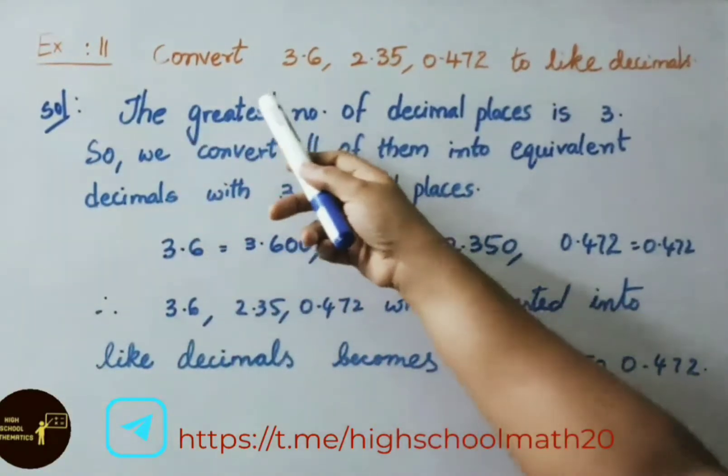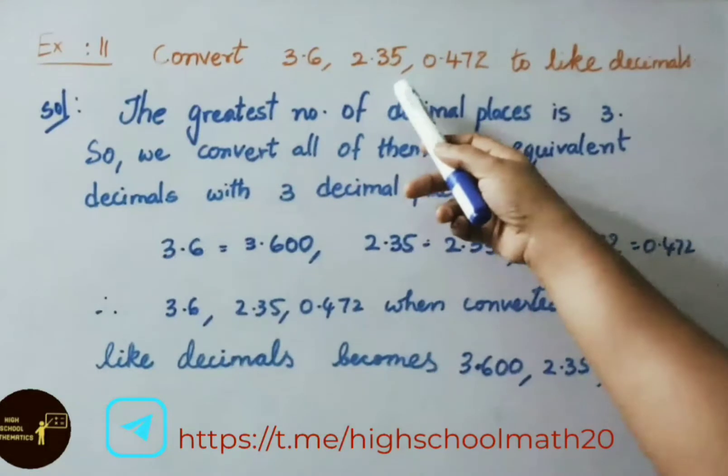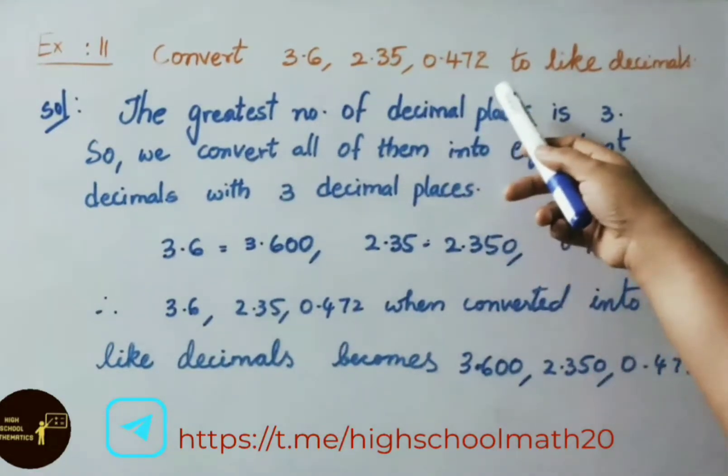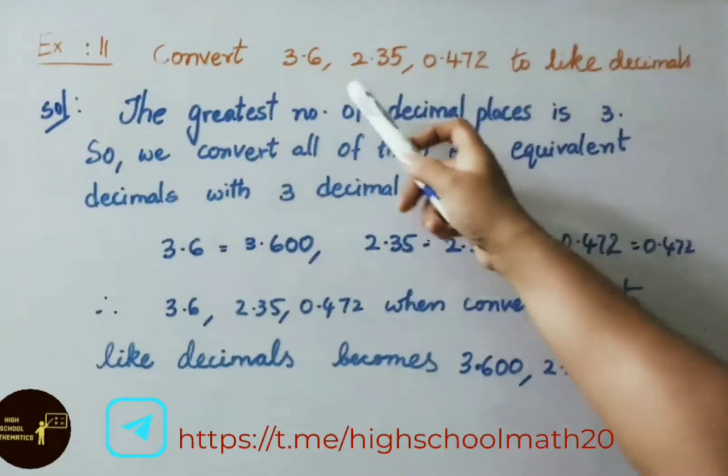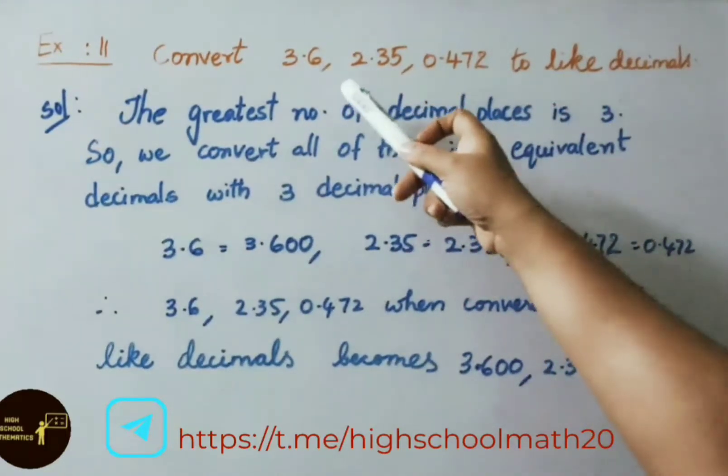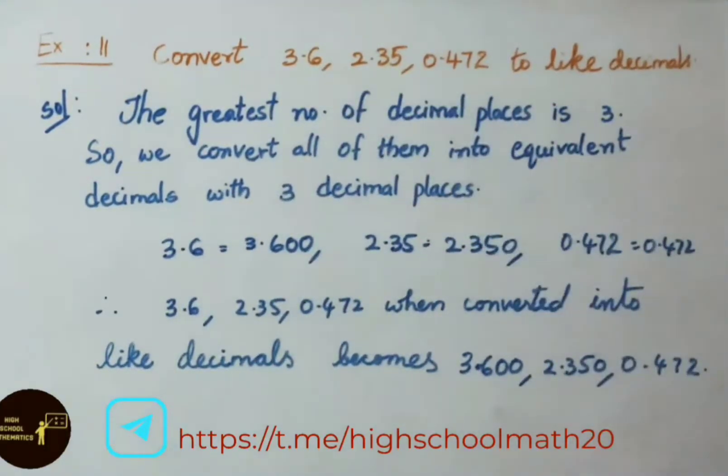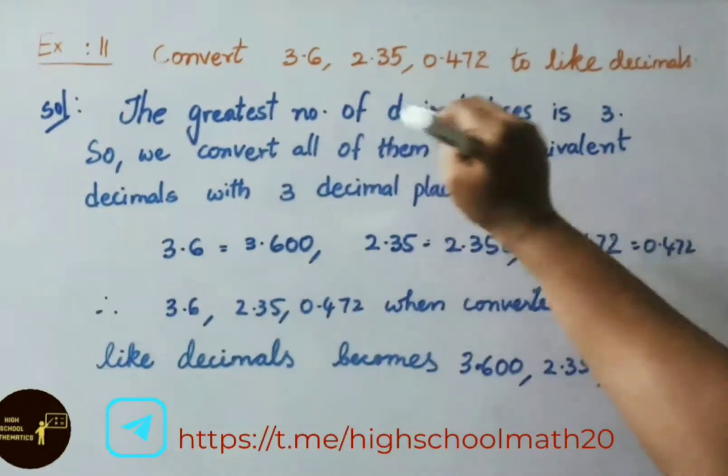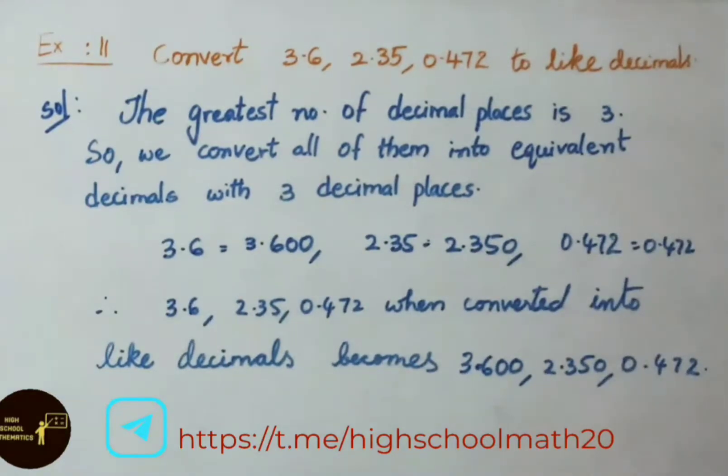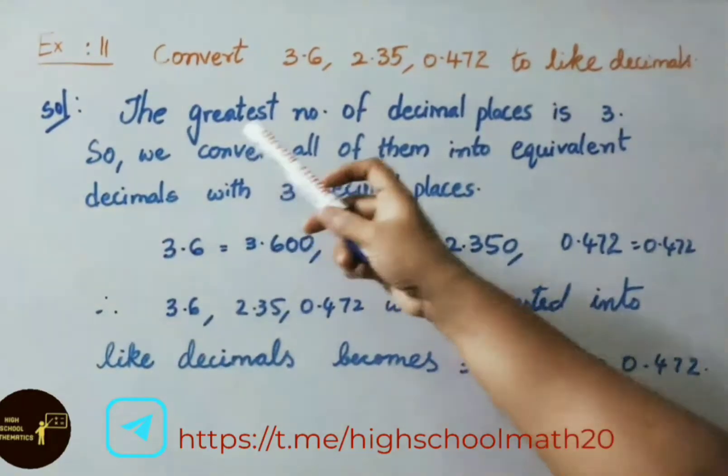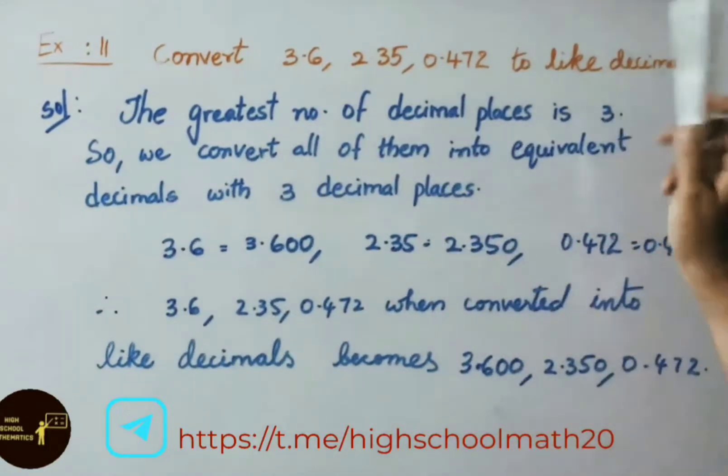Example 11: Convert 3.6, 2.35, 0.472 to like decimals. Here in the first decimal only one decimal place is there. 2.35 has two decimal places. 0.472 has three decimal places. The greatest number of decimal places is 3.